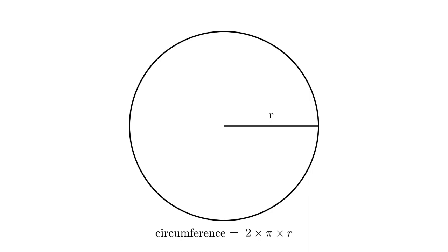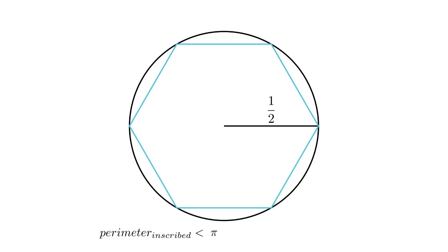All right, so here's the plan for how we'll do the calculation. Let's just pick r equals one-half. That will simplify because then the circumference just becomes pi. And let's draw a hexagon inside the circle. And the perimeter of that is less than pi. And then we'll draw a hexagon outside the circle, the circumscribed hexagon. That perimeter is greater than pi.